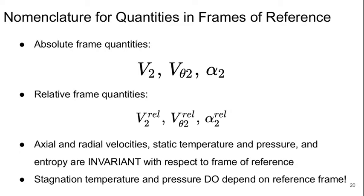A little bit of nomenclature here for the quantities in our various frames of reference. So absolute quantities, we'll just call v2 whatever, vθ2, which is the tangential component. Relative frame quantities, we'll use the superscript rel. The axial and radial velocities, the static temperature and pressure, and entropy are invariant quantities with respect to our reference frame in our engines. Whereas the stagnation temperature and pressure do depend on reference frame.